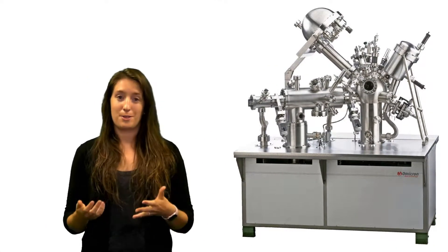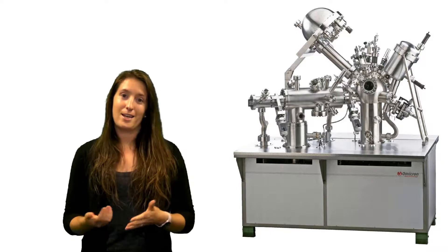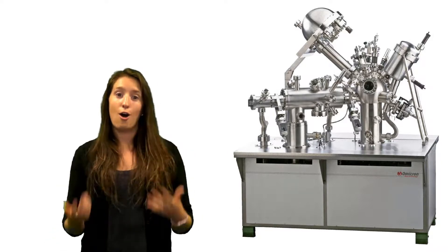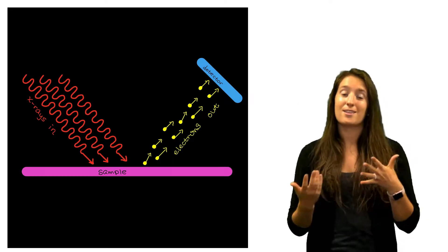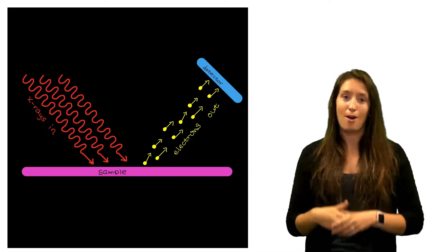The photoelectron spectrometer is a large metal container that keeps the electrons on the path to the detector. This detector tells us a lot about the electron that jumped off the surface.